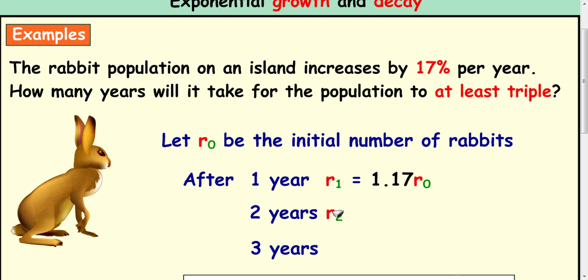In year two we need to take the rabbits at the end of year one and multiply by 1.17 again, which is the equivalent of multiplying R0 by 1.17 and then again by 1.17, which is just squaring.